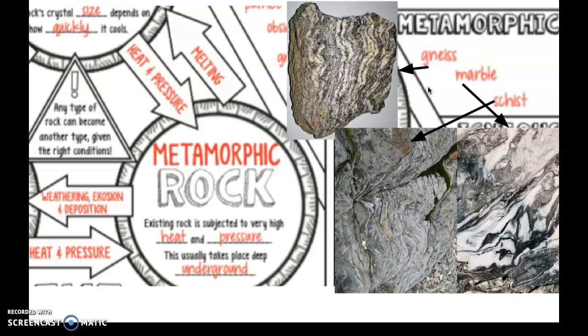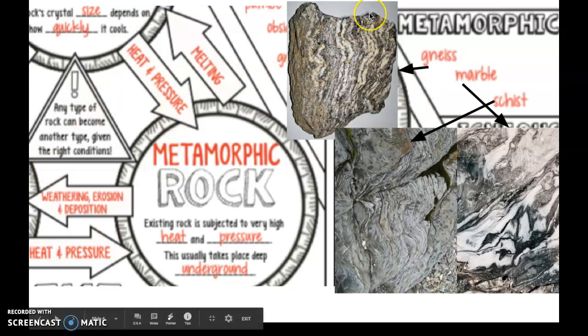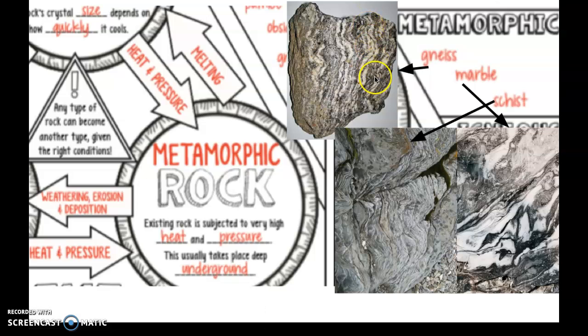Our next type of rock is called a metamorphic rock. These are formed when existing rock is subjected to very high heat and very high pressure. This takes place usually deep underground, close to the mantle. Metamorphic rocks are typically striated — they look layered, so you can sometimes confuse them with a sedimentary rock, but their layers are typically wavy and look kind of melted together. That heat does that.